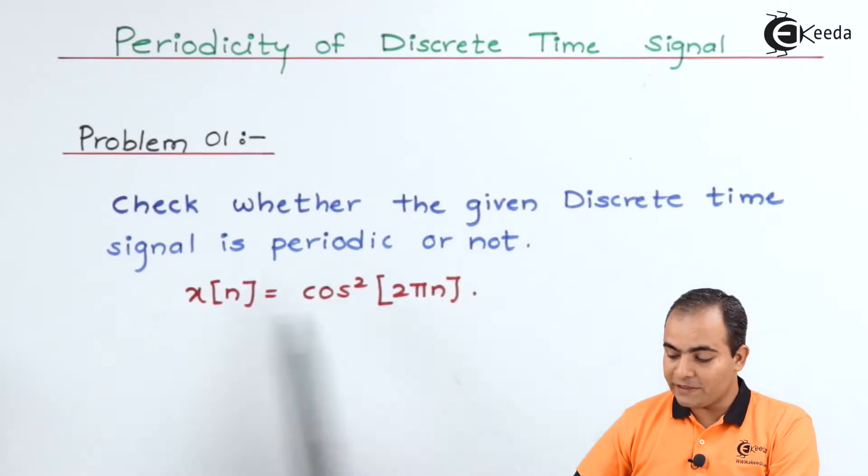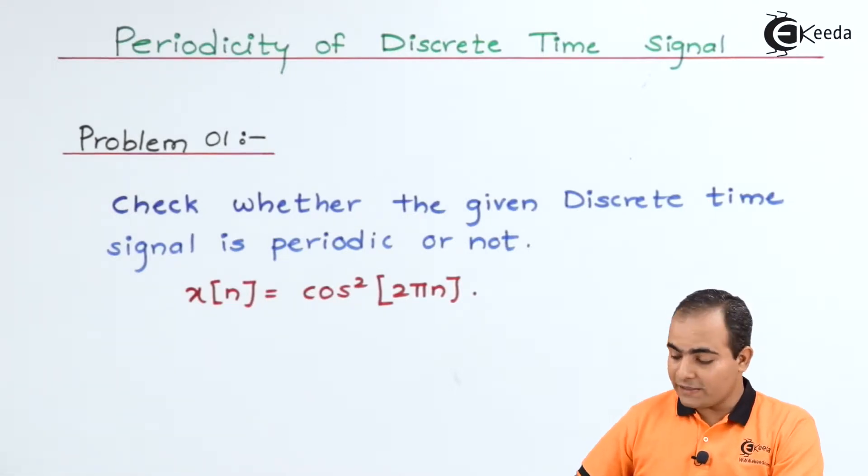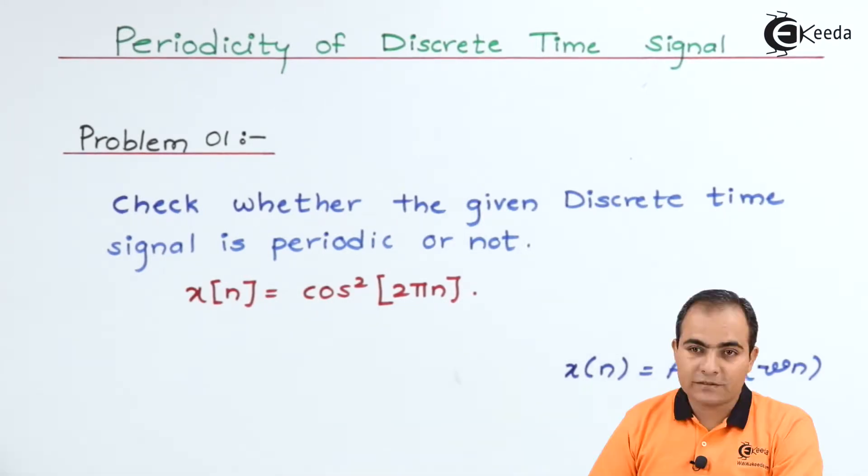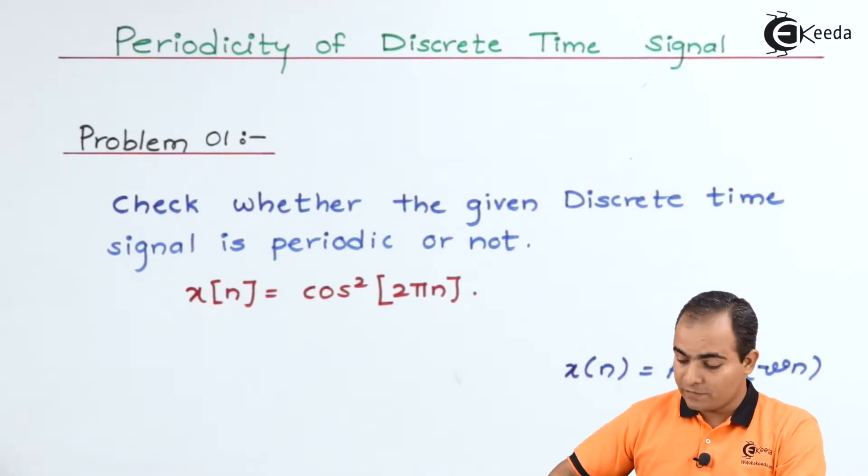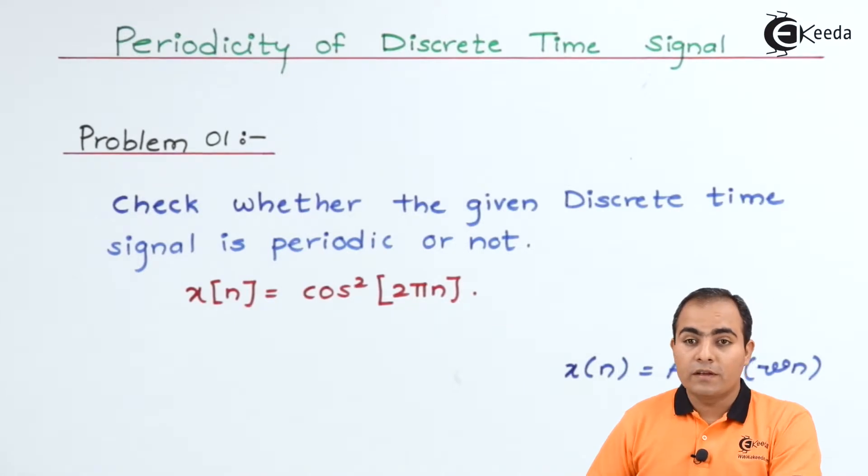Check whether the given discrete time signal is periodic or not. Where will you find the period? In many questions or standard equations we have studied one formula: a cos of omega n. From this omega you can get the value of total number of samples.